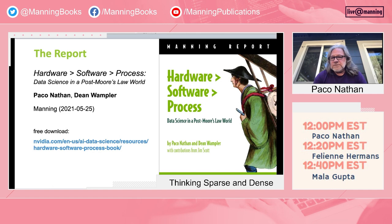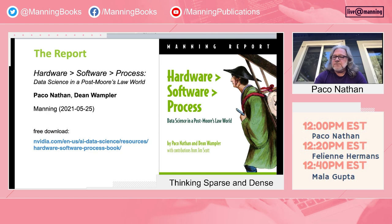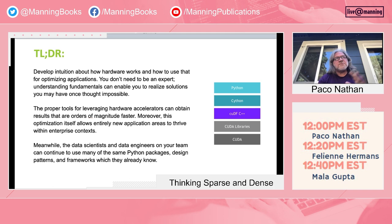These days I do a lot of work with machine learning, knowledge graph, and natural language in open source. This talk is about a recent report that just came out last month on Manning. Dean Wampler and I wrote it — it's called Hardware is Greater than Software is Greater than Process, and there's a free download if you follow the link. We did this working with some of the software leads for open source projects at NVIDIA and also experts in leveraging GPUs, various areas of machine learning and graph analytics.